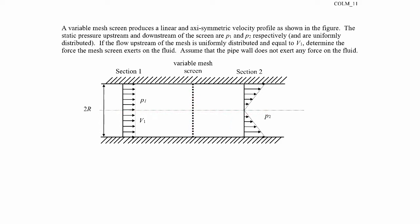We're told to assume that the pipe wall does not exert any force on the fluid. So this will be a linear momentum problem, and the reason is because I'm trying to find a force. Force shows up in the linear momentum equation. Physically, we have some linear momentum coming in, that linear momentum has changed as it goes out, so some force must have acted on it. That force is the force exerted by the mesh screen on the fluid. So we're going to apply linear momentum here.